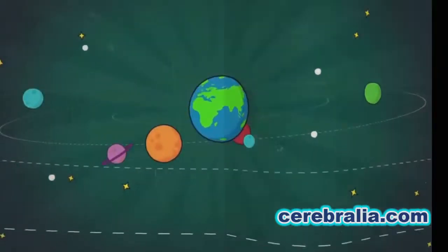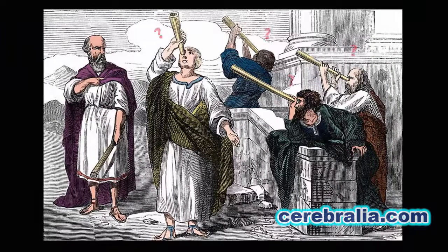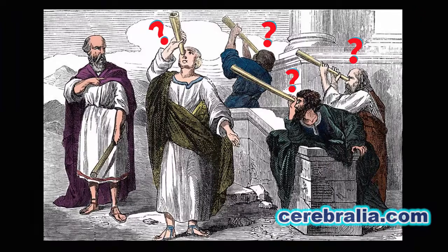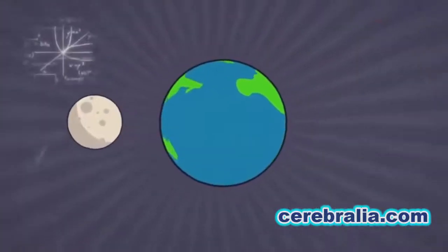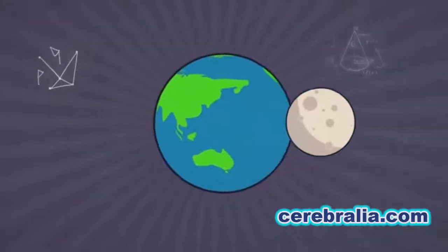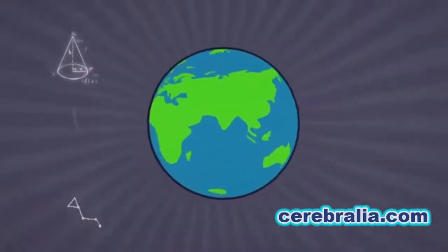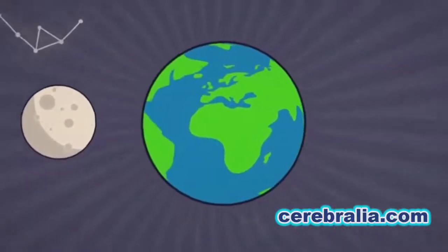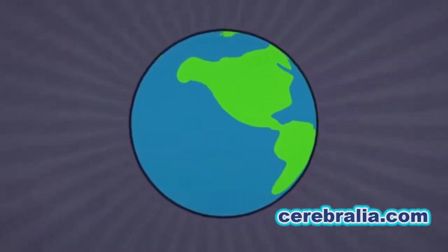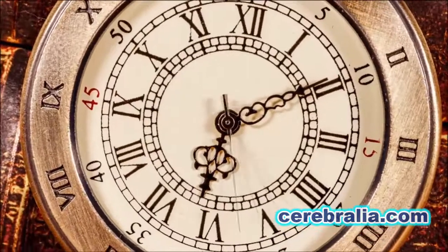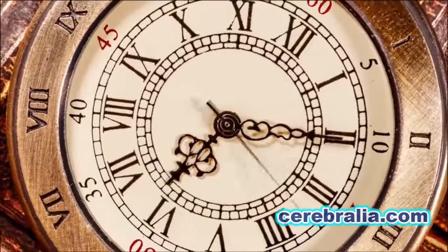However, the geocentric model couldn't explain the retrograde motion and the changes in brightness of the planets. So astronomers tried to fit their observations to the theory, making this model increasingly complicated. Despite the complexity of the model, the geocentric theory prevailed for over a thousand years.